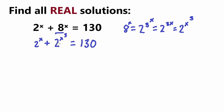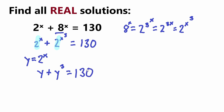Now we have 2^x plus (2^x)^3 equals 130. Notice that 2^x appears in both terms. That means we can substitute a variable for 2^x to make the problem easier to work with. Let's set y equal to 2^x, so the equation becomes y plus y cubed equals 130.